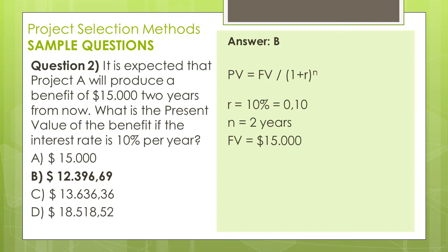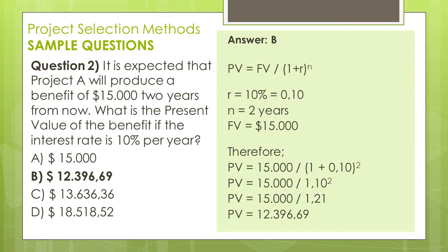For this question, since the interest rate is given as 10%, R equals 0.10. The number of time periods is given as 2 years, therefore N equals 2. We are looking for today's value of $15,000, so $15,000 is the future value. PV equals $15,000 divided by (1 plus 0.10) to the power of 2, which gives us $12,396.69.